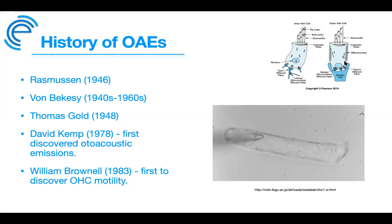Going back to 1948, Thomas Gold first predicted the presence of cochlear emissions based on a mathematical model of cochlear non-linearity. We know today that active processing happens when outer hair cells are stimulated and begin to actively vibrate beyond passive processing at their resonant frequency — contracting upon upward basilar membrane movements and expanding upon downward deflection — enabling more precise frequency tuning and extra amplification.